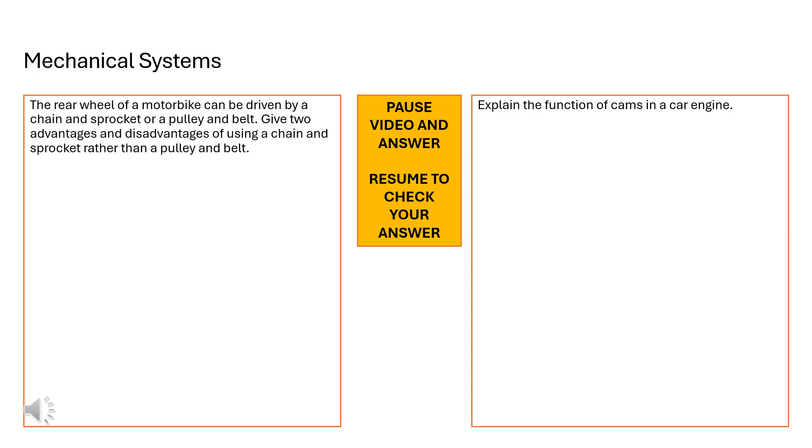As in my previous video I am going to talk about some mechanical system questions to get you thinking about how to answer some of these questions if they came up in your exam. The first question is the rear wheel of a motorbike can be driven by a chain and sprocket or a pulley and belt. Give two advantages and disadvantages of using a chain and sprocket rather than a pulley and belt. The other question is explain the function of cams in a car engine. At this point I would like you to pause the video, answer the question and then resume.